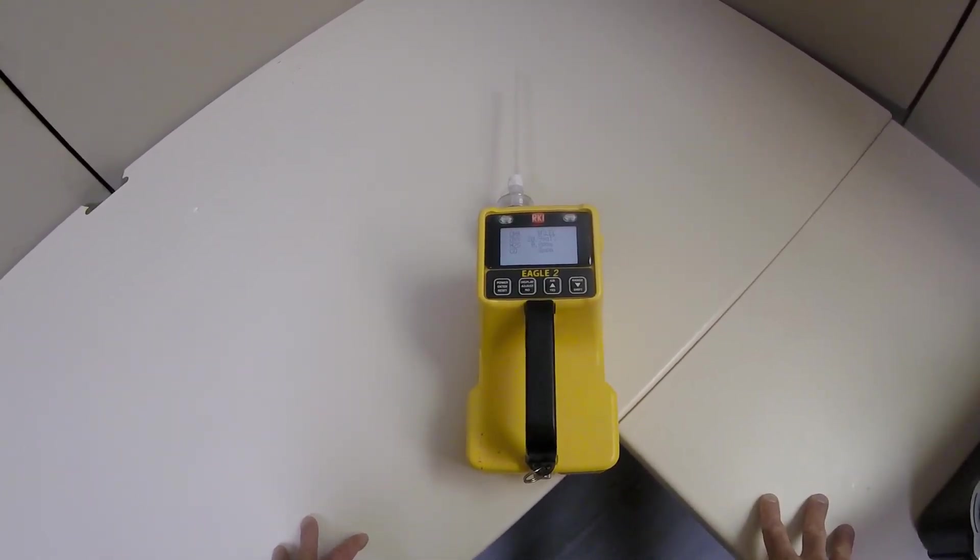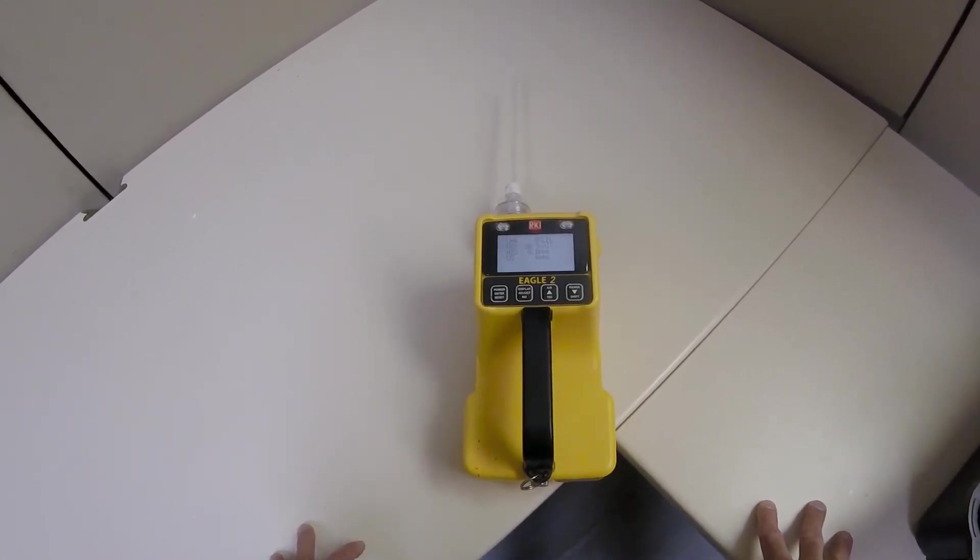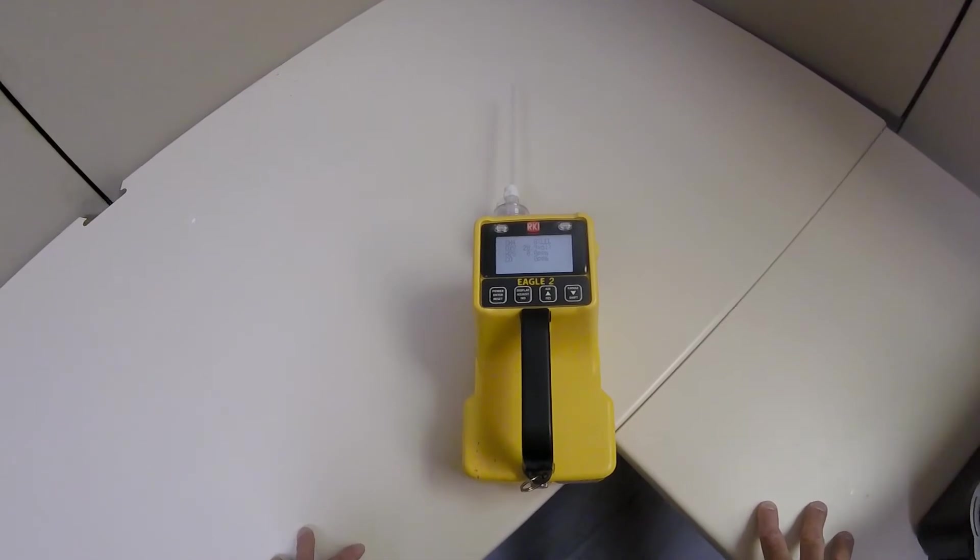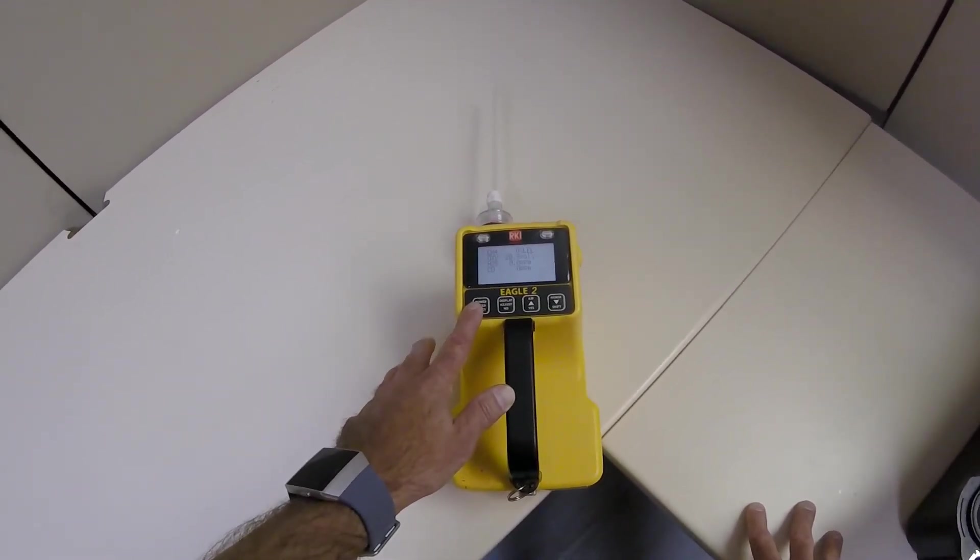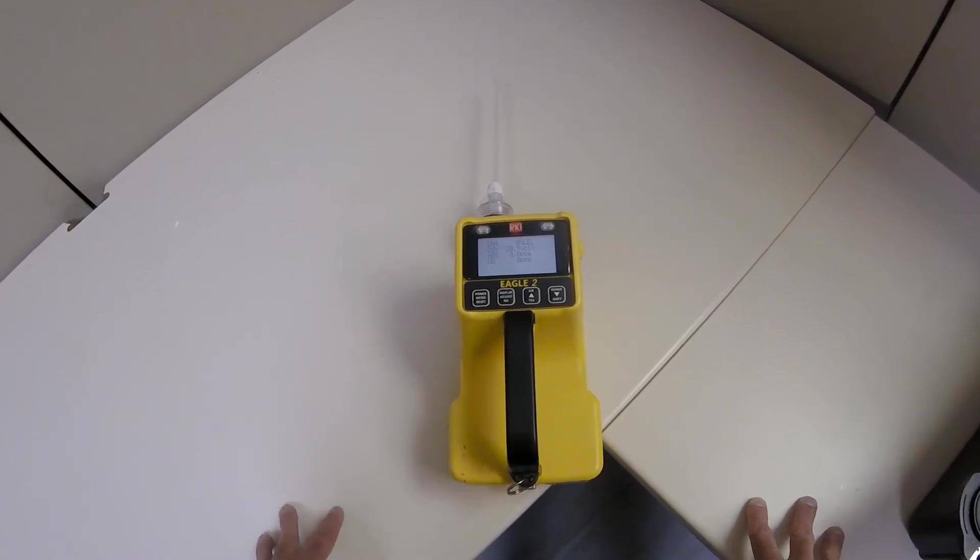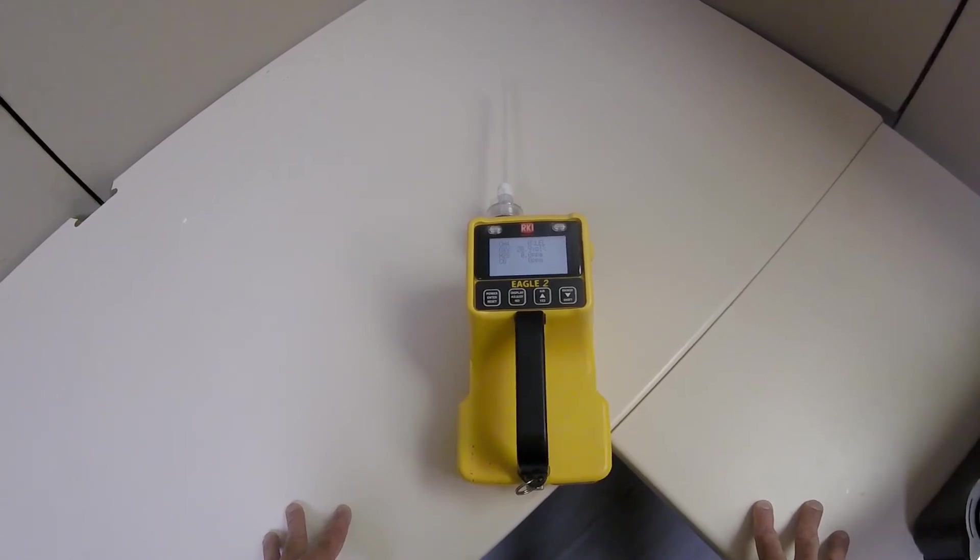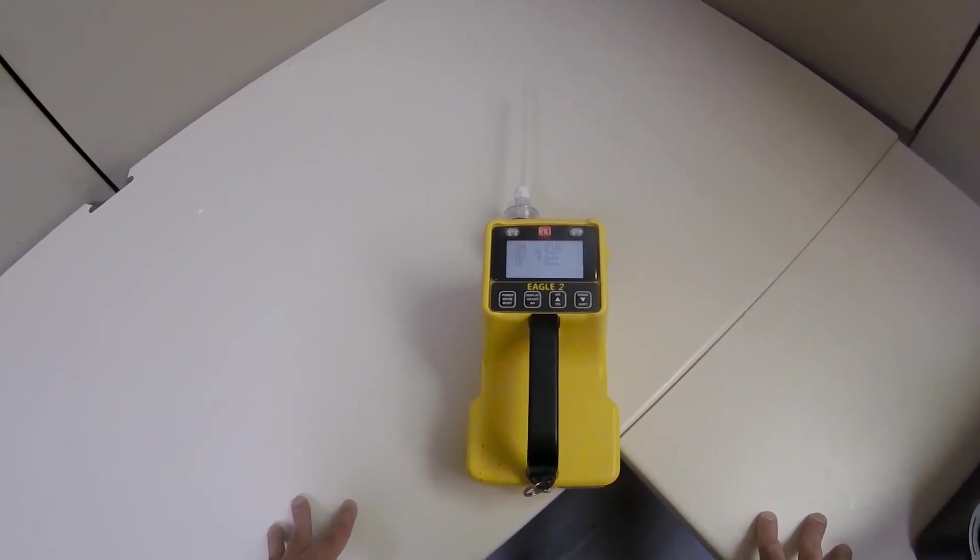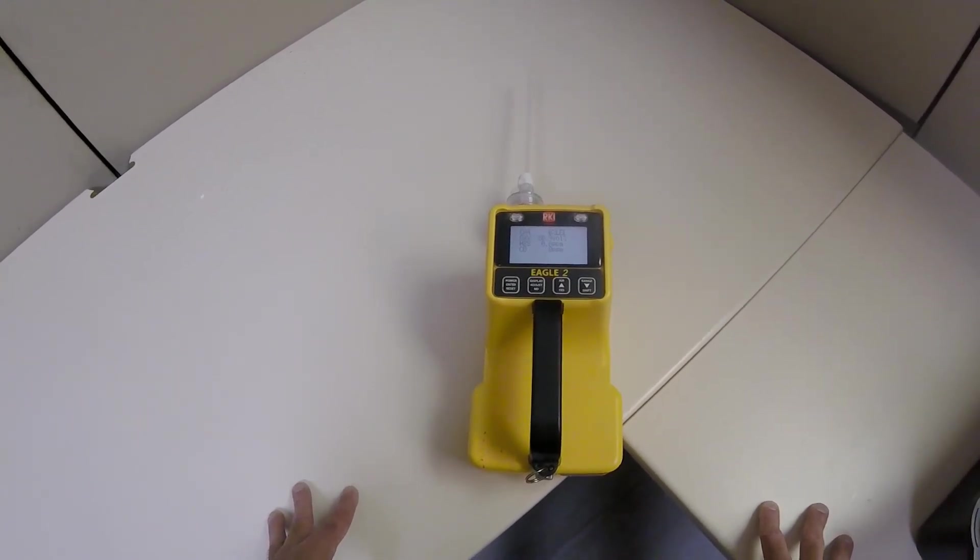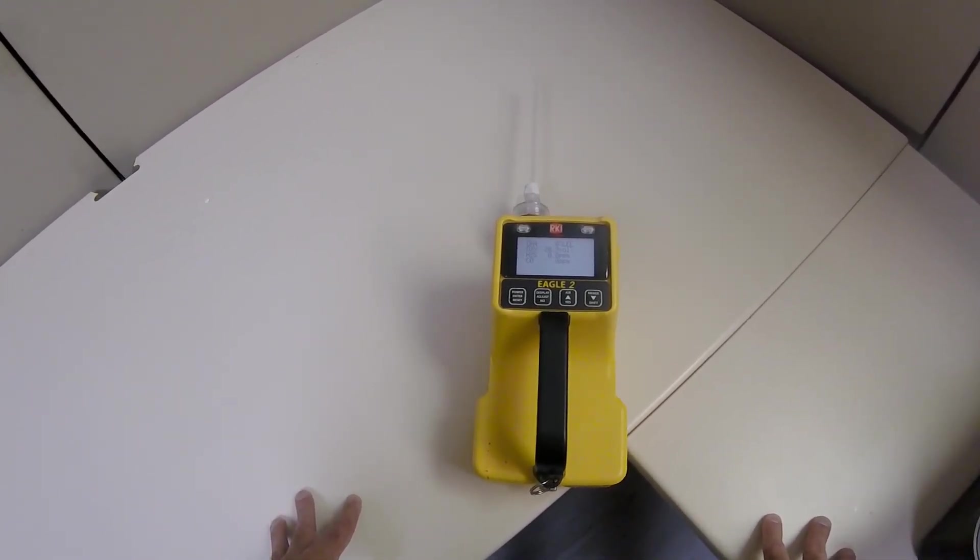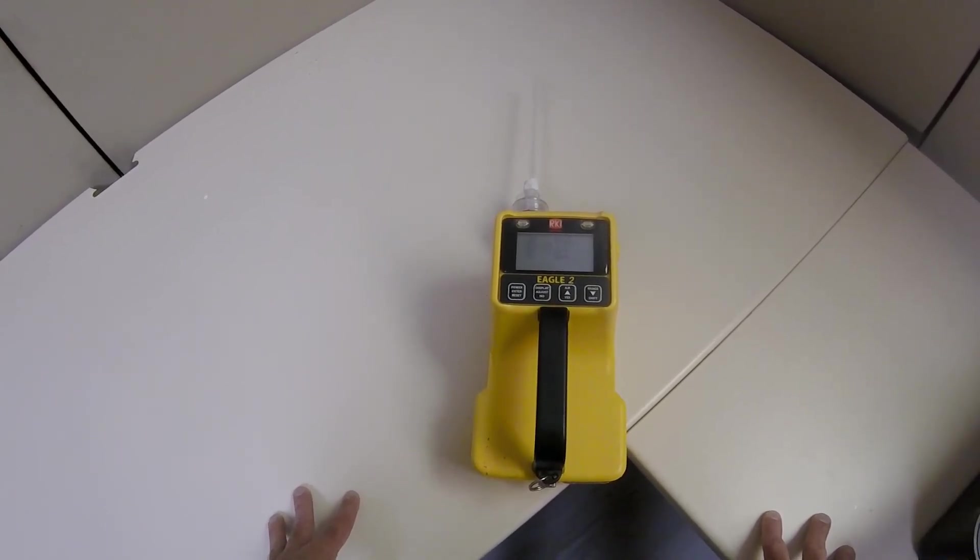Resetting and silencing alarms: If alarm silence is turned on, press and release power enter reset button to silence the alarm. The audible alarm will silence and the alarm LEDs will continue to pulse. If the Eagle 2 alarms are set to latching, to reset the alarm you will need to press the power enter reset button once the alarm condition has cleared. If the Eagle 2 alarms are set to self resetting, the alarms will automatically reset once the alarm condition has cleared.